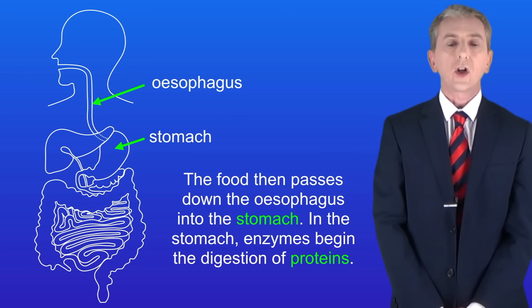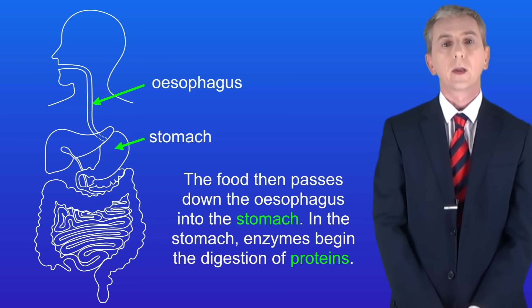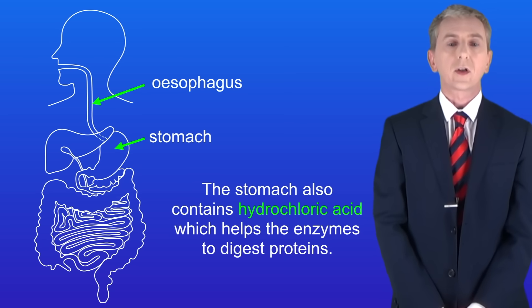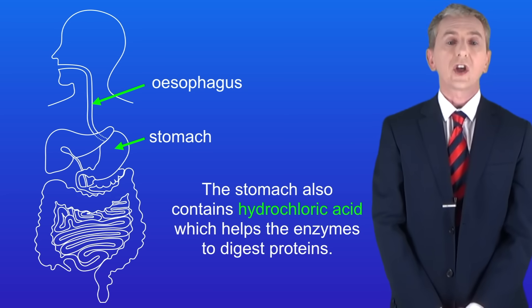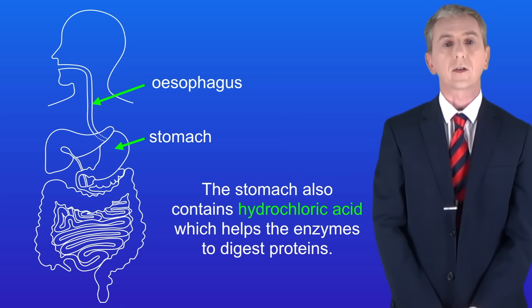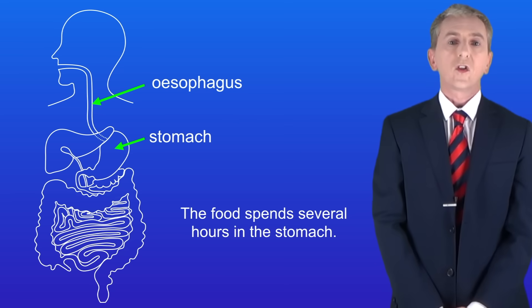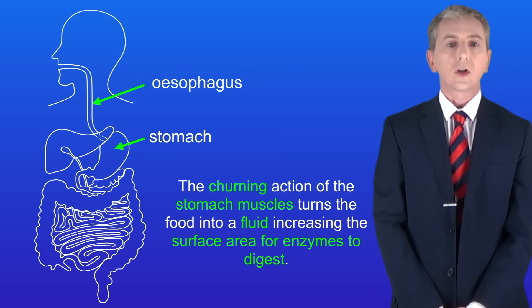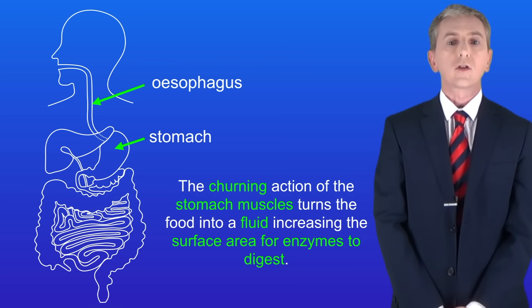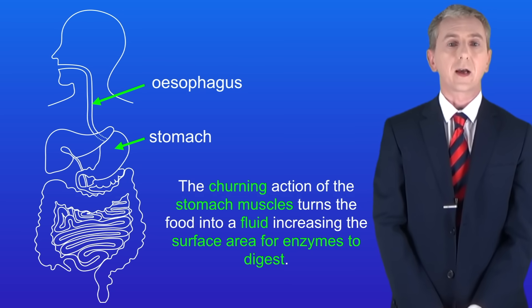In the stomach, enzymes begin the digestion of proteins. A key point is that the stomach also contains hydrochloric acid which helps the enzymes to digest proteins. The food spends several hours in the stomach, and the churning action of the stomach muscles turns the food into a fluid, increasing the surface area for enzymes to digest.